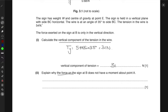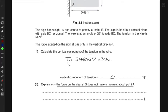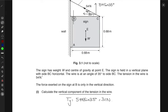Now explain why the force on sign at B does not have a moment about point A. If you look at this, point A is directly below point B. What does that mean? That means that the line of action of the force at B is passing through the point A. And if the line of action passes through a particular point, it does not have a moment about that point.